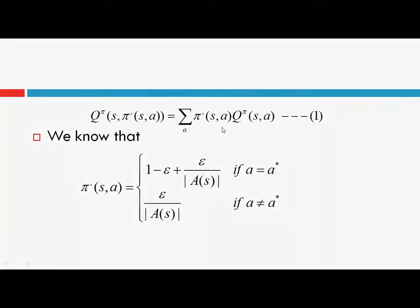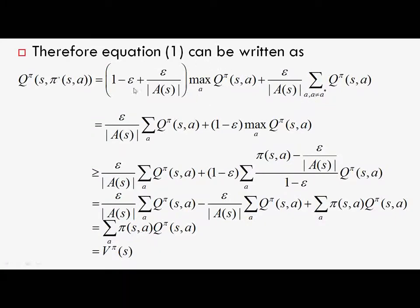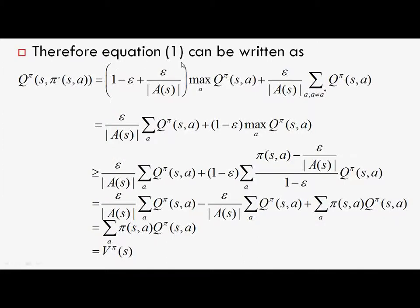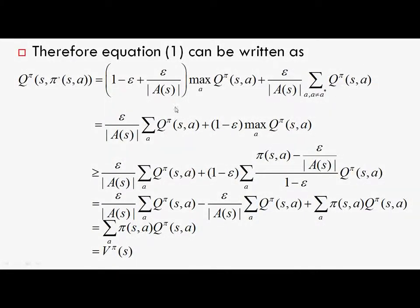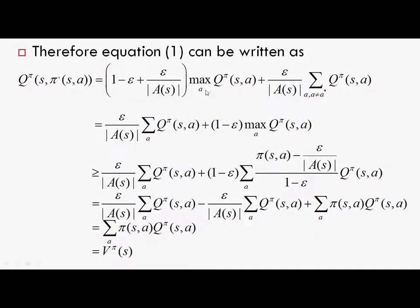We consider a summation over all actions — greedy plus all non-greedy actions — making the probability of occurrence of greedy and non-greedy actions explicit. Now we combine the two terms: this term with this term. It becomes 1 minus epsilon times max over a of q_pi(s, a), written separately, and we club the remaining two terms together.